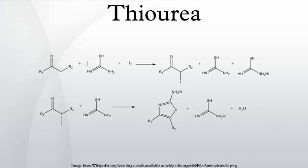Thiourea is an organosulfur compound with the formula SC(NH2)2. It is structurally similar to urea, except that the oxygen atom is replaced by a sulfur atom, but the properties of urea and thiourea differ significantly.